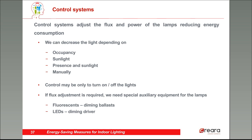A control system to control the luminaires needs: first, detectors to measure the inputs; second, dimmers to control the lamp output; and finally, a control system — a brain — that sends orders to the dimmers based on the input values received and the reference values set. Usually the control system is integrated in the detector.